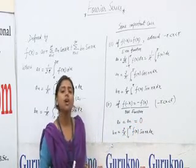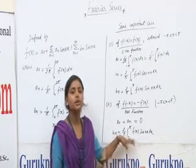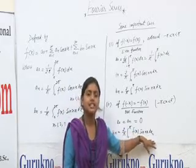So we calculate only the value of bn, and bn equals 2 upon π integration 0 to π f(x) sin nx dx.